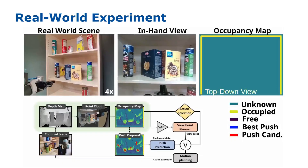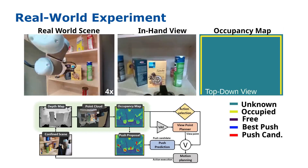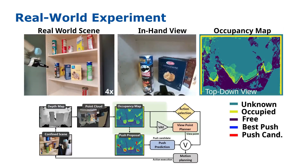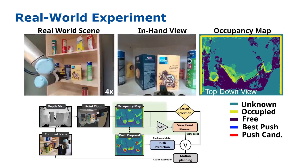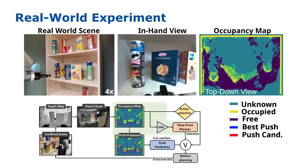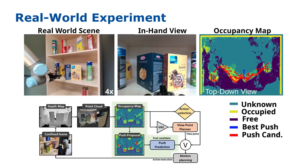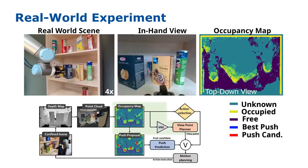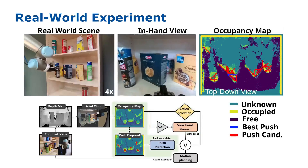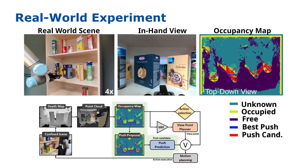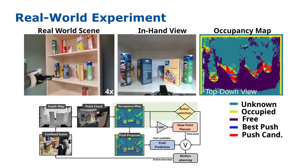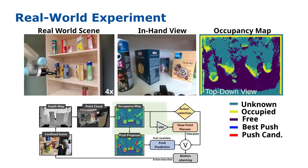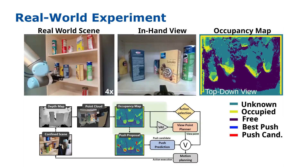Finally, we present a real-world experiment. Our system decides to perform a push directly between the two occluding boxes. The push prediction made by our network seems to be the right choice, since after the push, the viewpoint planner is able to detect and map the smaller box at the back of the shelf.